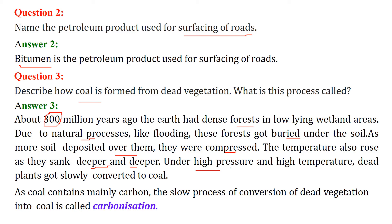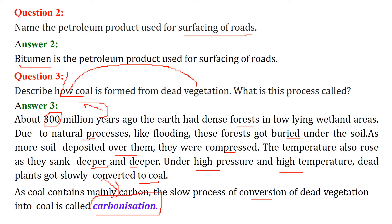Because of high pressure and high temperature, the dead plants slowly converted to coal. Since coal contains mainly carbon, the slow process of conversion of dead vegetation into coal is called carbonization.